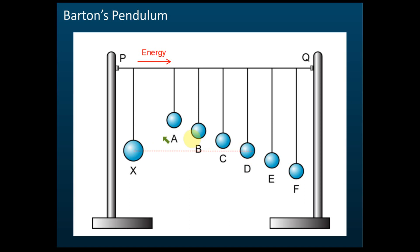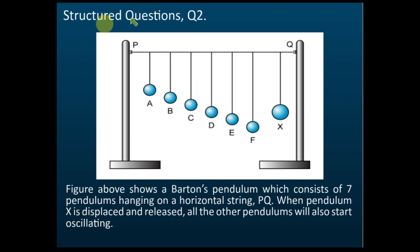Since they have the same natural frequency, when X vibrates, pendulum D will experience resonance, because the external force given to this pendulum bob has the same frequency as its natural frequency. We know that if the external force has the same frequency as the natural frequency, resonance will happen and the pendulum will vibrate with maximum amplitude.